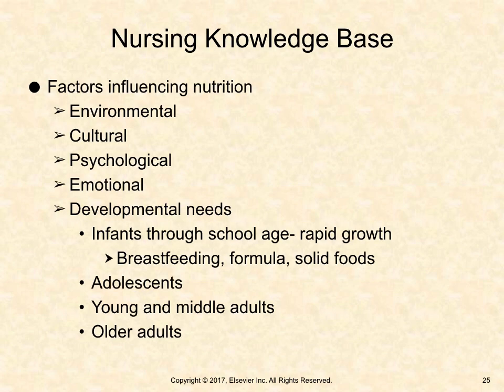There are several factors that influence nutrition: environmental, cultural, psychological, emotional, and developmental needs. Infants through school-age children experience rapid growth and require high-protein meals. School-age children should be assessed for adequate protein and vitamins A and C intake. Adolescents have increased energy needs due to higher metabolic growth demands. Young and middle adults' requirements focus on energy for maintenance and repair as growth slows. Older adults experience a decreased need for energy due to slowing of their metabolic rate.